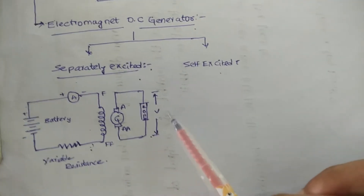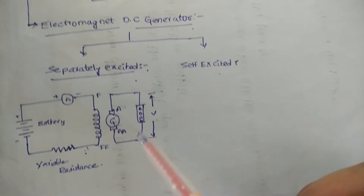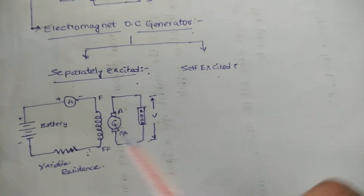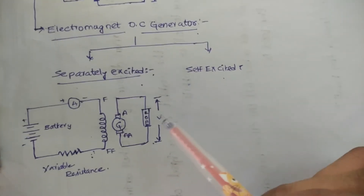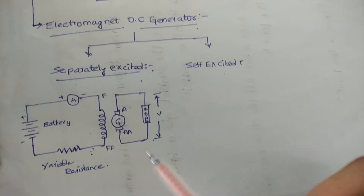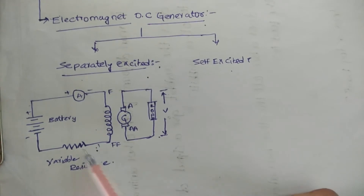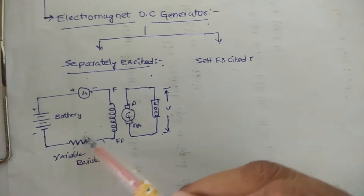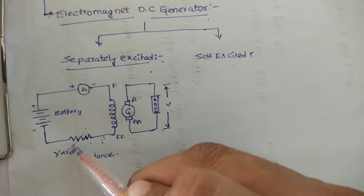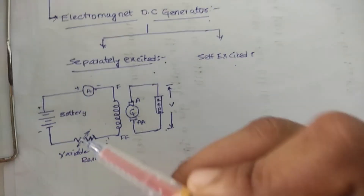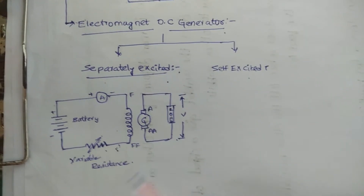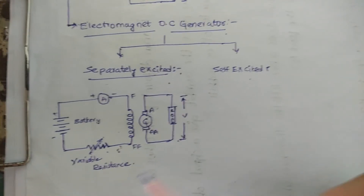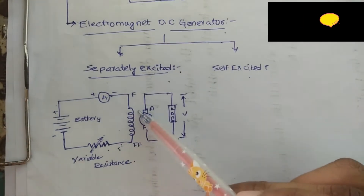The field winding consists of several hundred turns of fine wire. The field current can be varied by varying the resistance using a variable rheostat. The variable rheostat is connected in series with the battery, so that the field winding generates the flux.